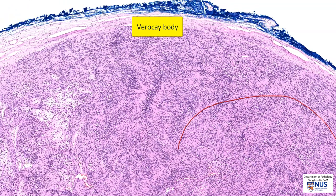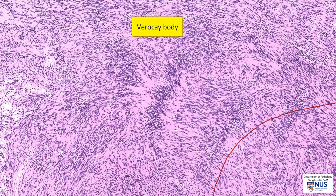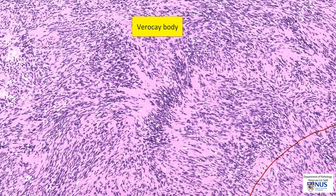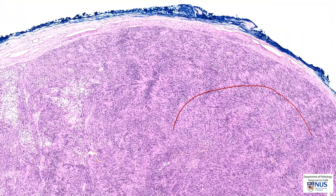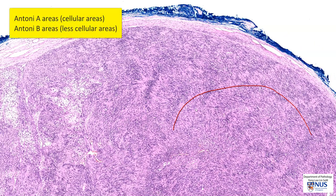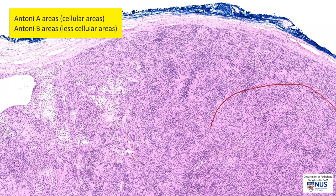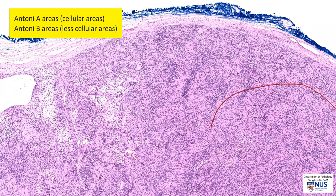We have another example here with a nuclear palisade and another palisade here, and this pinkish fibrillary material — so this is another Verocay body. Usually, Verocay bodies are seen in the more cellular areas. The more cellular areas of a schwannoma are known as Antoni A areas, whereas the more hypocellular, looser areas are known as Antoni B areas.